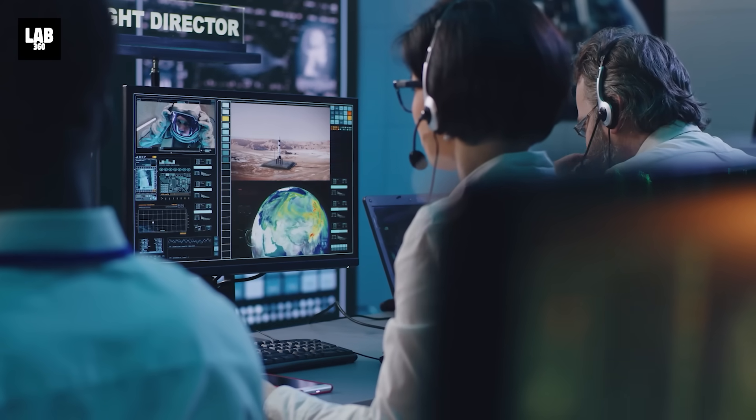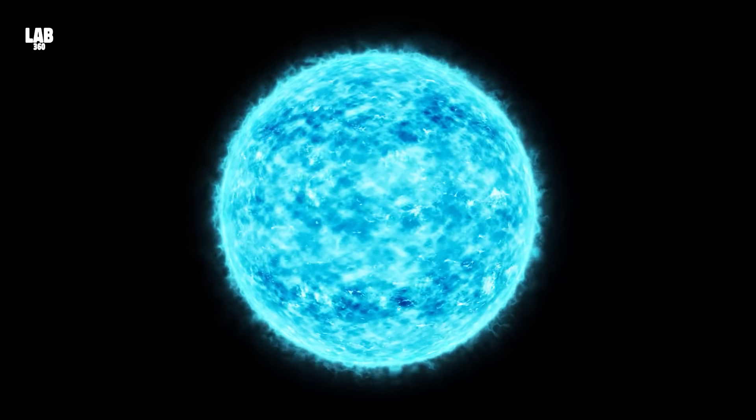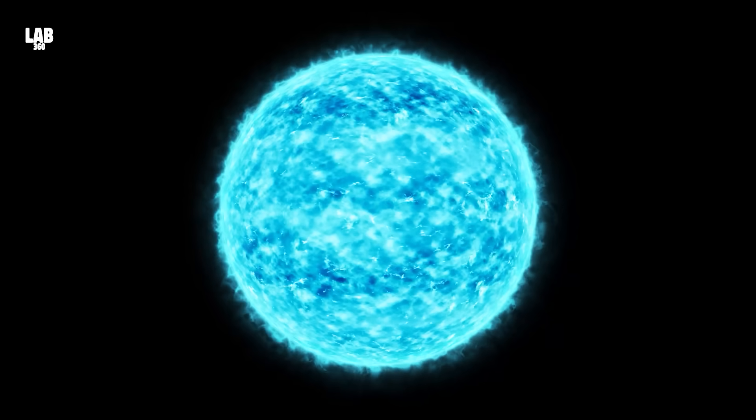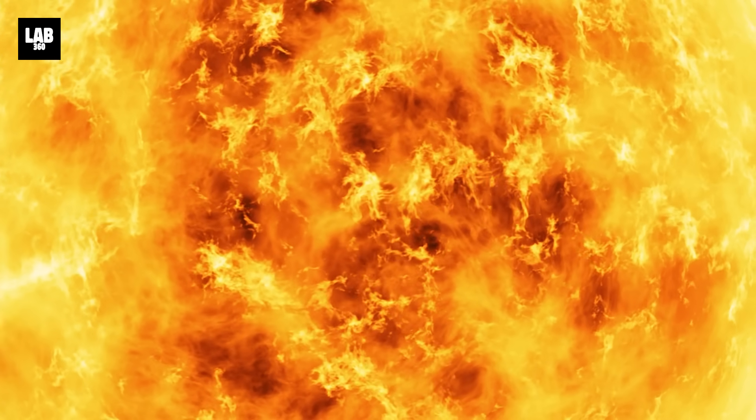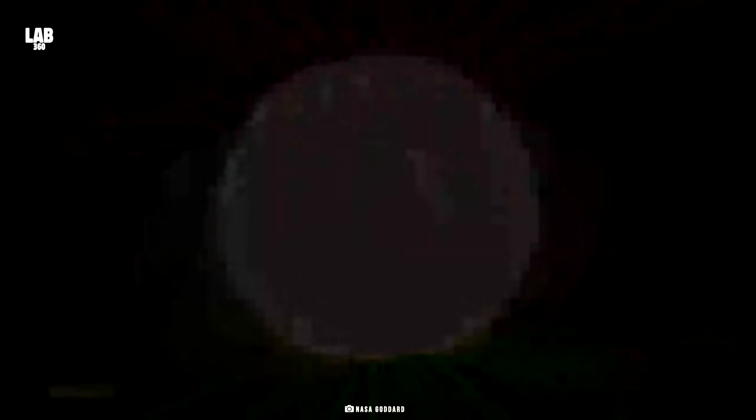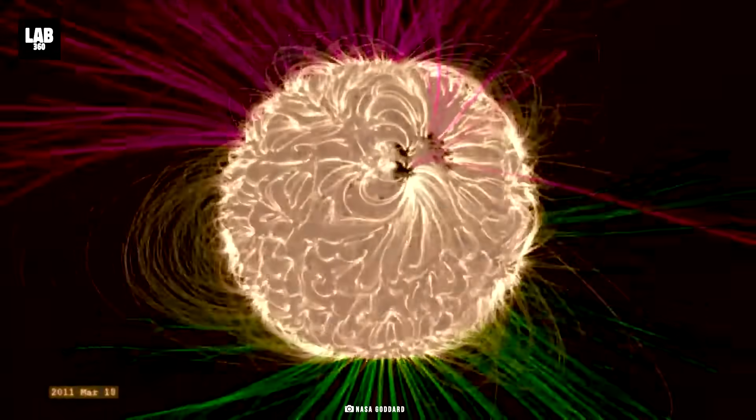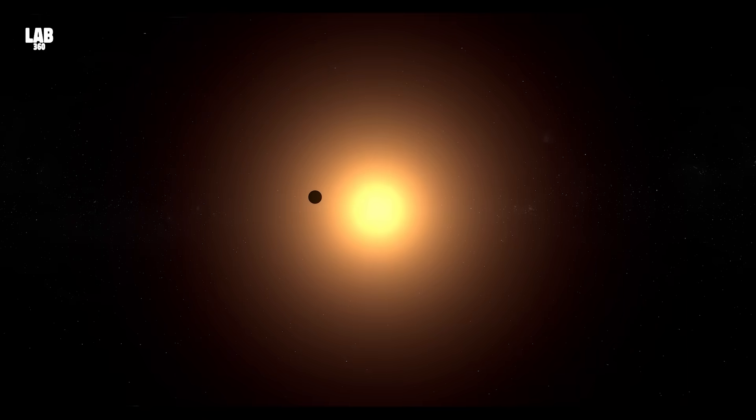Furthermore, researchers from the Chinese Academy of Science delved into Betelgeuse's temperature fluctuations during this dimming period. Their findings unveiled star spots, similar to sunspots on our own sun, as the likely cause. These disturbances in Betelgeuse's magnetic field temporarily blocked radiation, resulting in the observed temperature drop.